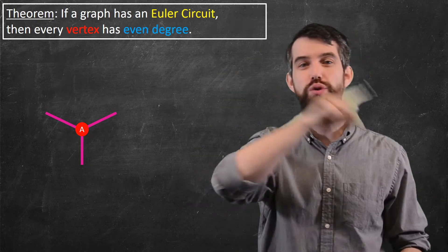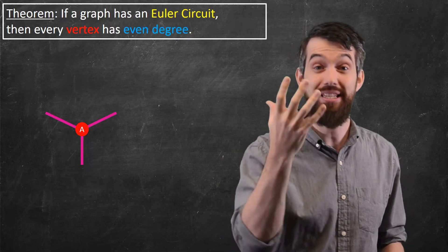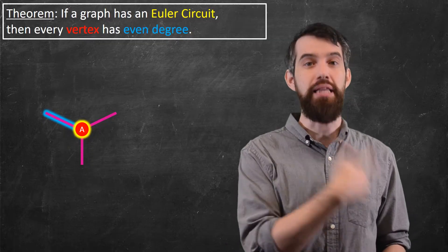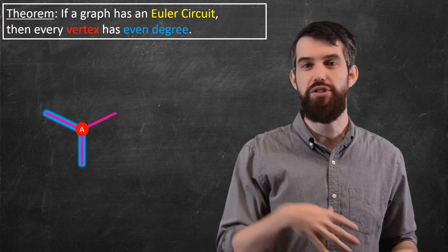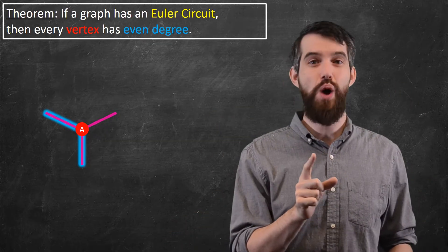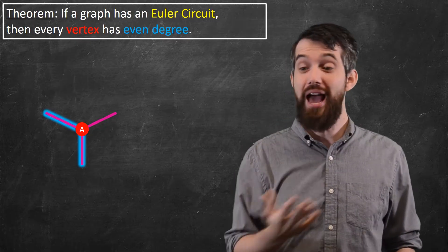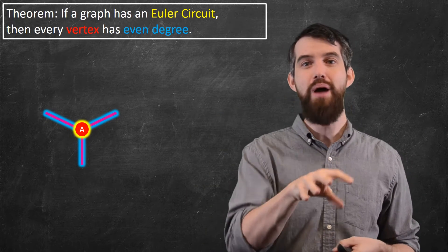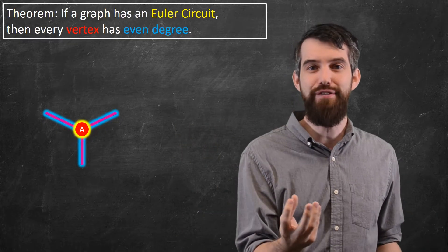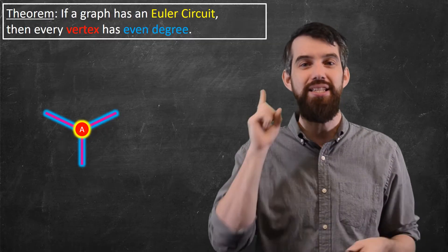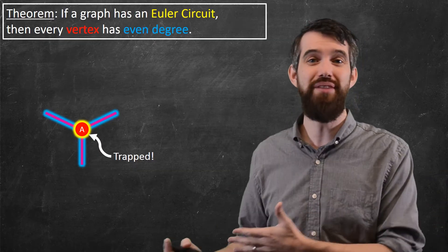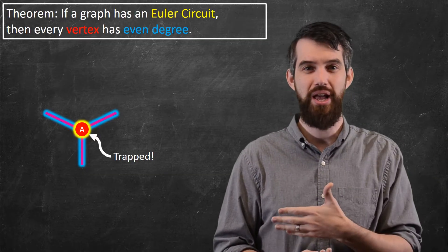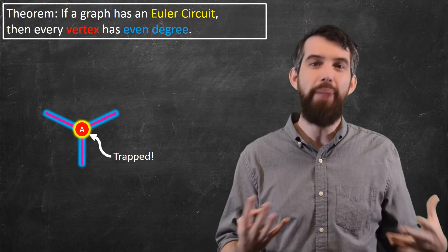Imagine I'm doing my Euler circuit and I arrive at vertex A — coming in from the top left. Now I have to leave, so maybe I go out the bottom, then go off and do a bunch of other stuff. But eventually, because I want to hit every edge exactly once, I have to come back in to A again. I've come in and gone out, come in again — and now I'm trapped. If I want to leave A, I'd have to use an edge I've already covered. Whether it's three, five, or seven edges doesn't matter: as long as there's an odd number, at some point you'll come in and be trapped, unable to leave.